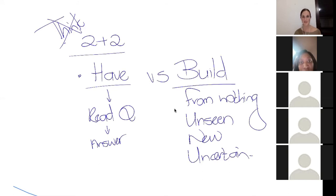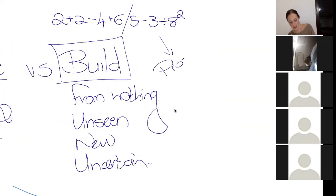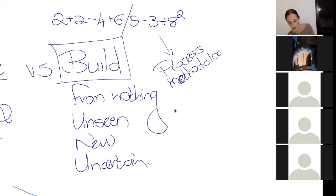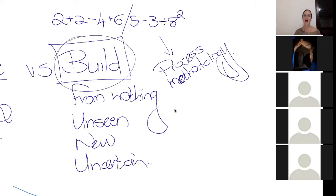We are not okay with that. It would be the difference between, say, two plus two or solve this. Two plus two minus four plus six divided by five minus three divided by eight to the power of two. Do you have the answer in your head? Probably not. Can you build an answer? Yes, you can. Why? Well, because we all understand that there's a methodology, there's a process that you follow in order to solve maths problems, BODMAS, order of operations. If I follow the process, I will be able to build an answer.